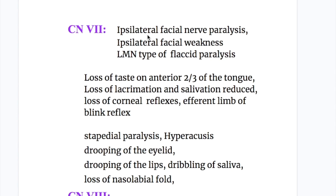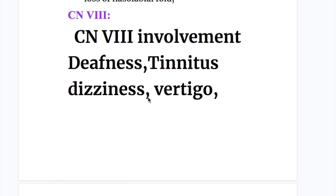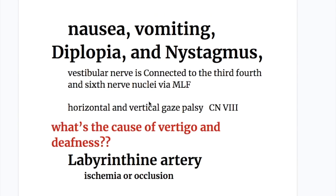Taste on the posterior one-third of the tongue is supplied by the glossopharyngeal nerve — the ninth cranial nerve. Facial nerve damage also causes loss of lacrimation and salivation, and loss of corneal reflex because the facial nerve forms the efferent limb. It also supplies the stapedius muscle in the inner ear; paralysis of stapedius causes hyperacusis, as the stapedius normally closes the oval window in response to loud sound to protect the inner ear. There is also drooping of the eyelid due to paralysis of orbicularis oculi and drooping of the lip due to paralysis of orbicularis oris. Cranial nerve eight — vestibulocochlear — causes deafness, tinnitus, dizziness, vertigo, nausea, vomiting, diplopia, and nystagmus. The vestibulocochlear nerve is connected to the third, fourth, and sixth cranial nerves via the medial longitudinal fasciculus, so a lesion causes horizontal and vertical gaze palsy.